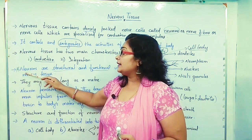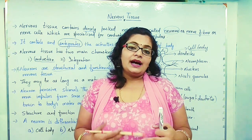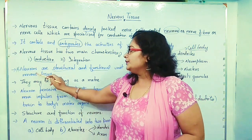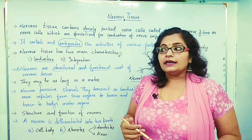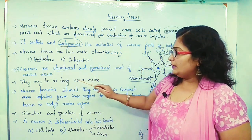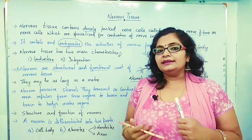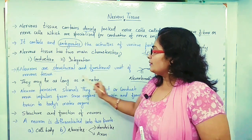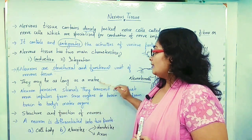As I mentioned, neurons are the structural and functional unit of the nervous tissue. Just as cells are the structural and functional unit of life, likewise neurons are the structural and functional unit of nervous tissue. They may be as long as one meter, and hence the neuron is also considered the longest cell in the body.